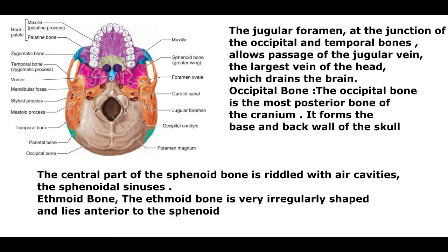Sphenoid bone. The butterfly-shaped sphenoid bone spans the width of the skull and forms part of the floor of the cranial cavity. The central part of the sphenoid bone is riddled with air cavities called the sphenoidal sinuses. Ethmoid bone. The ethmoid bone is very irregularly shaped and lies anterior to the sphenoid. It forms the roof of the nasal cavity and part of the medial walls of the orbits.